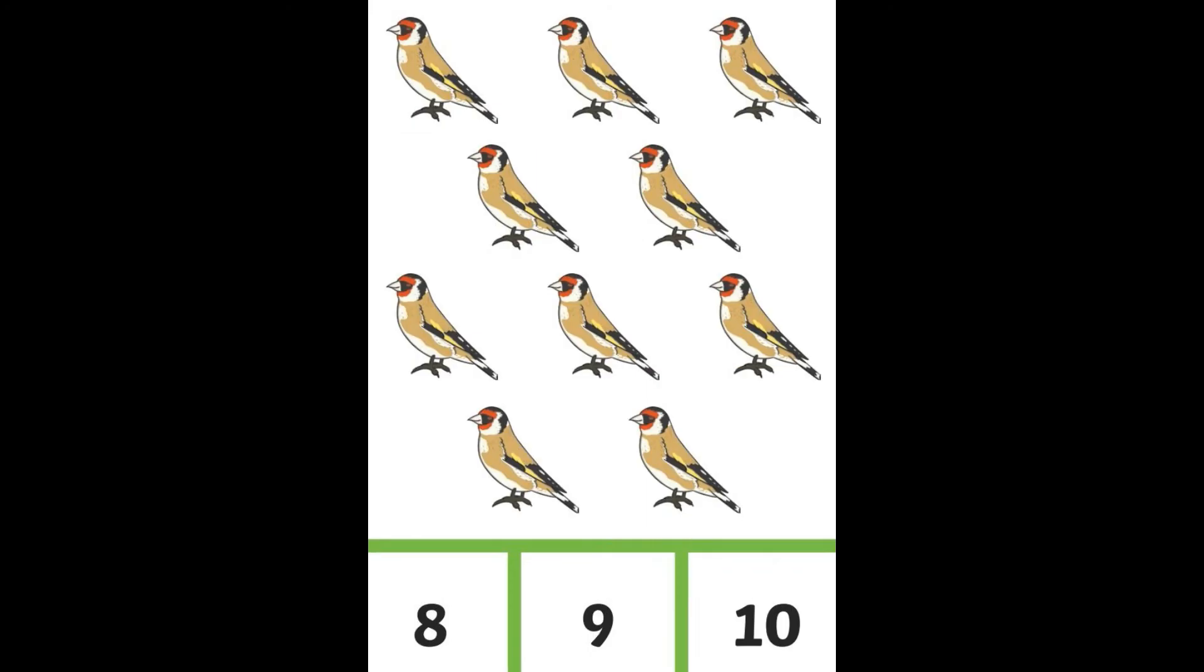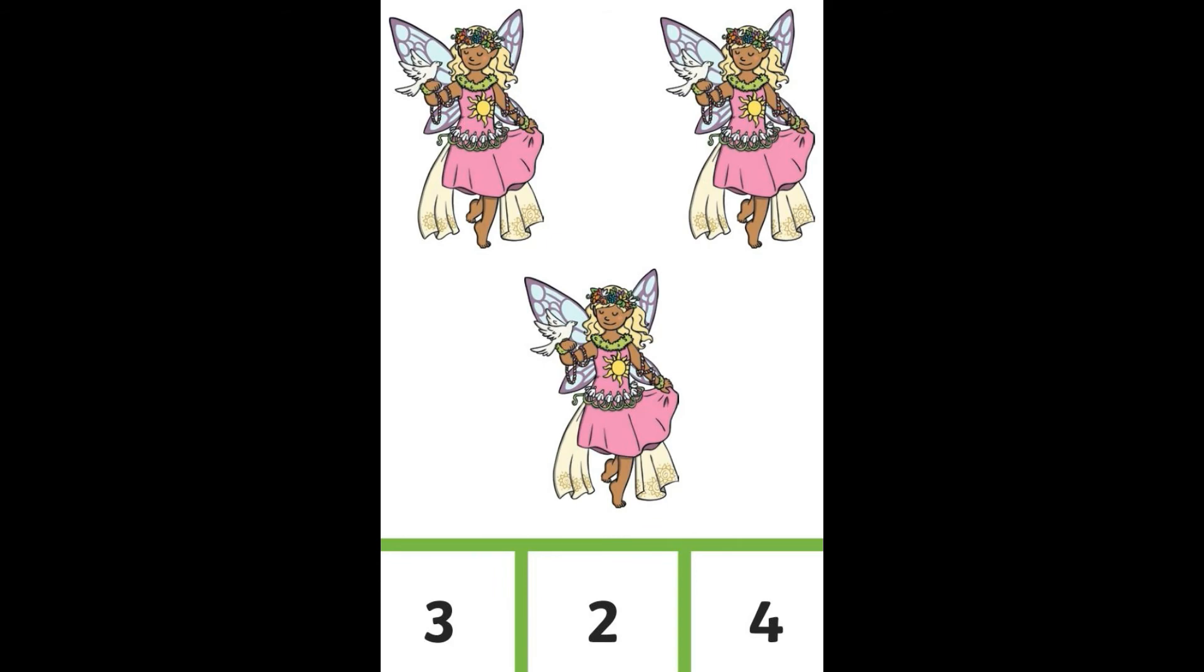How many birds? Eight, nine, or ten? It's ten. How many fairies? Three, two, or four? There are three fairies.